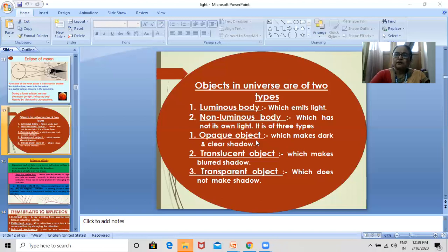Opaque object, non-luminous bodies are of three types, that is opaque object, translucent object, transparent object. Opaque object makes dark shadow, dark and clear shadow and translucent object makes blurred shadow, transparent object which does not make a clear shadow and does not make a shadow but due to deviation it shows the presence.